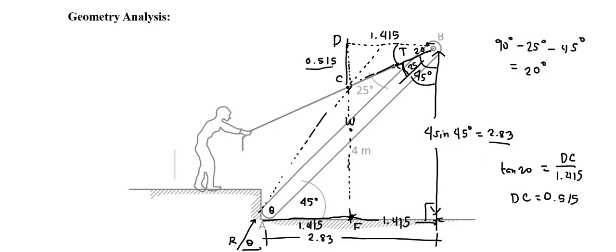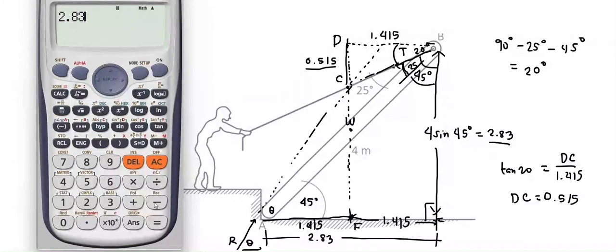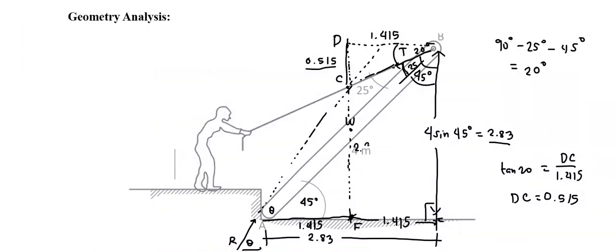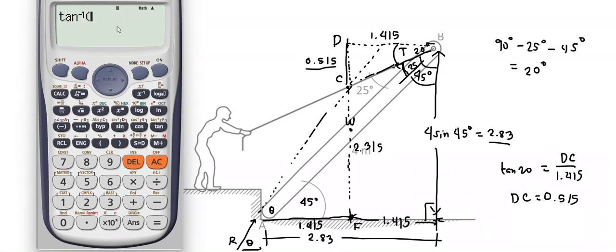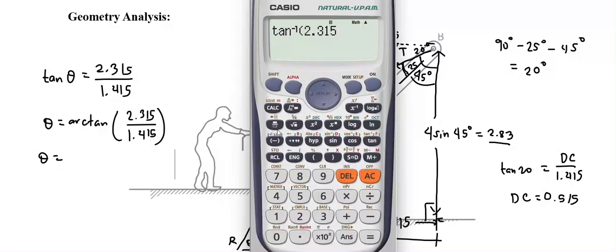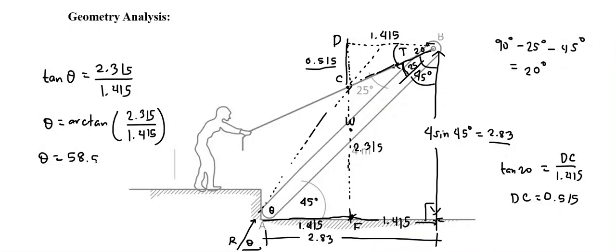Now, if we have the length for BF, that is 2.83, and DC is 0.515, we can solve for CF, which is equal to 2.83 minus 0.515, that is equal to 2.315. And we can solve for angle theta by using the tangent function. It's opposite over adjacent. Therefore, theta is equal to arctan of 2.315 divided by 1.415, which is equal to 58.57 degrees.